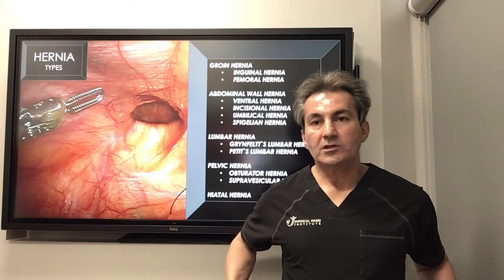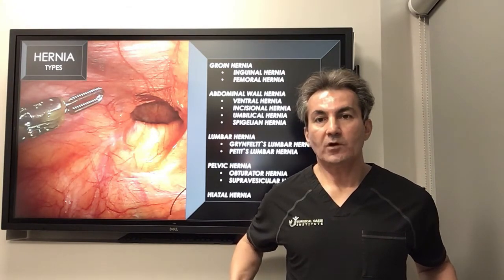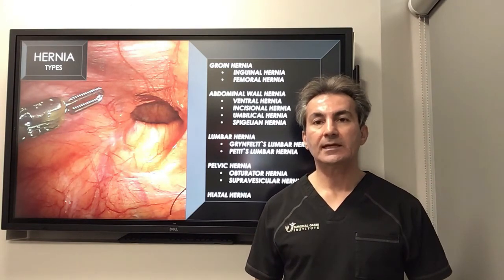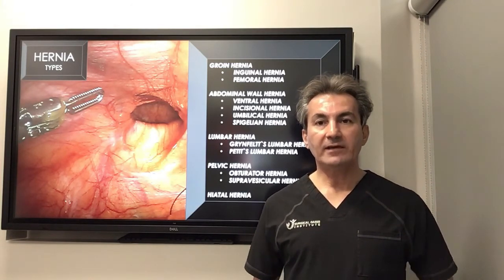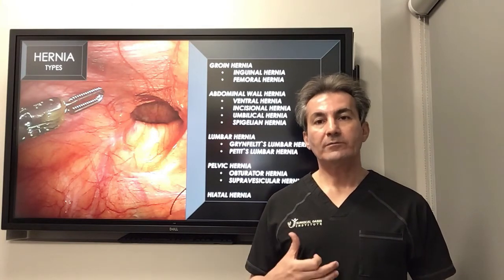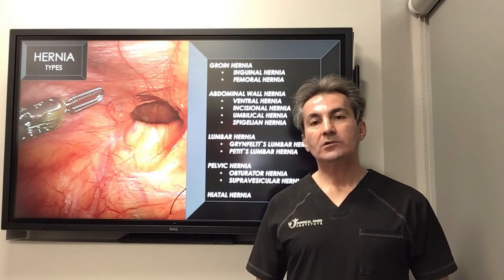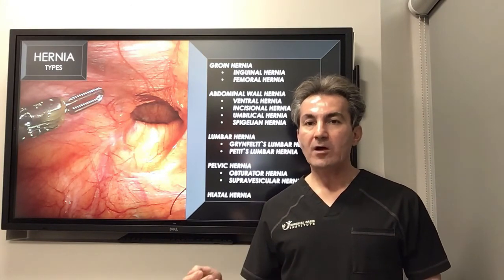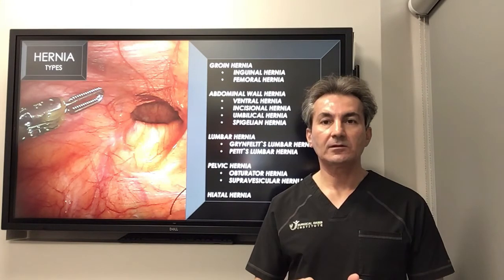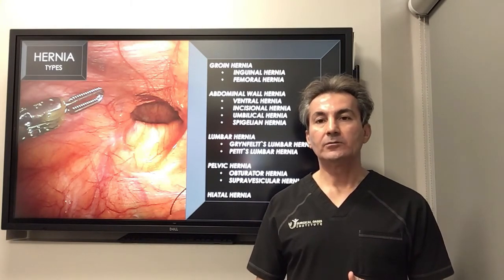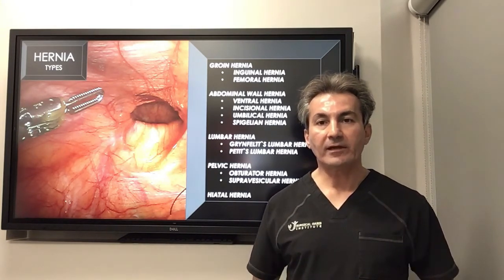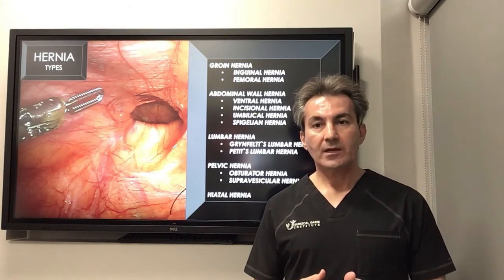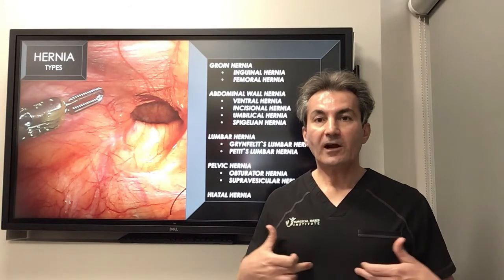There are also very rare hernias in the back called lumbar hernia. We also have pelvic floor hernia, involving the muscles that separate the pelvic cavity from the abdominal cavity. This type of hernia is very common in older females after multiple pregnancies, where the defects in the pelvic area create a pelvic floor hernia.